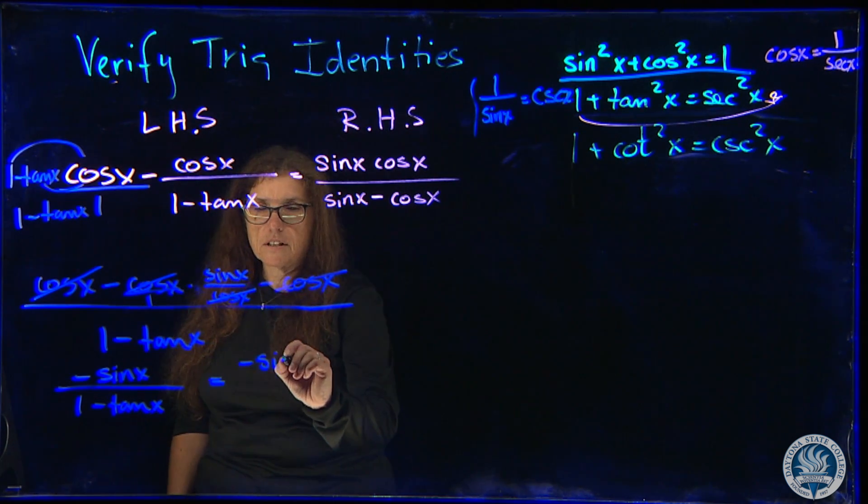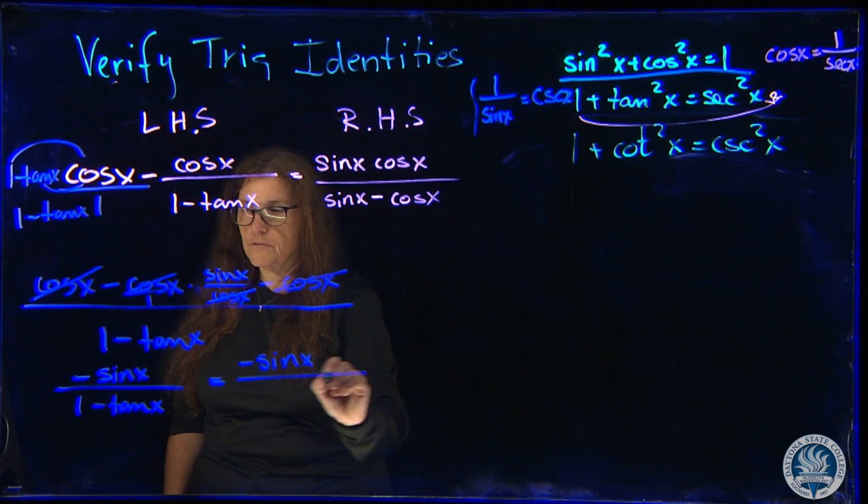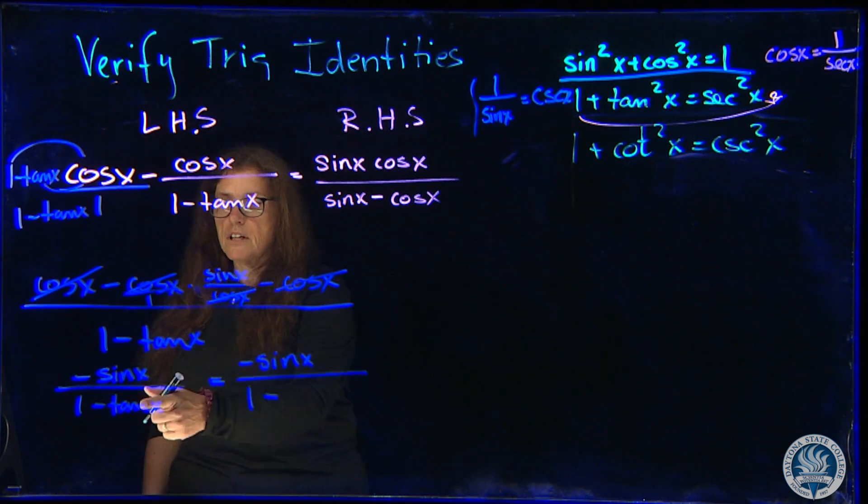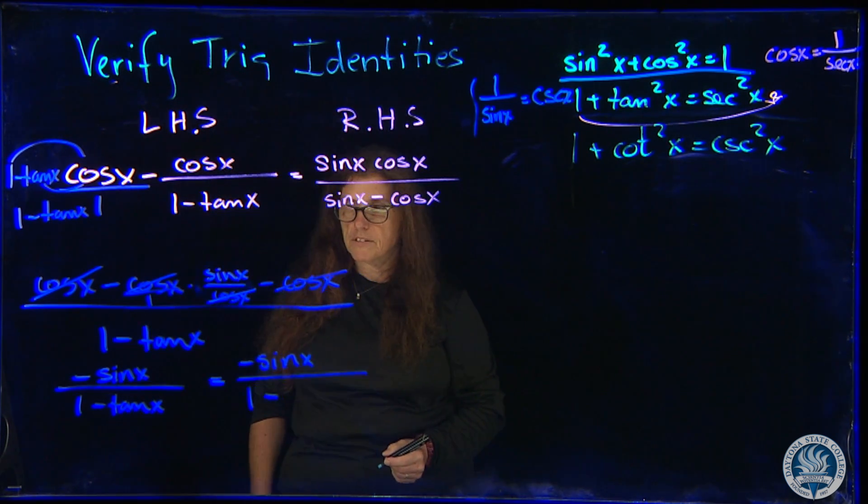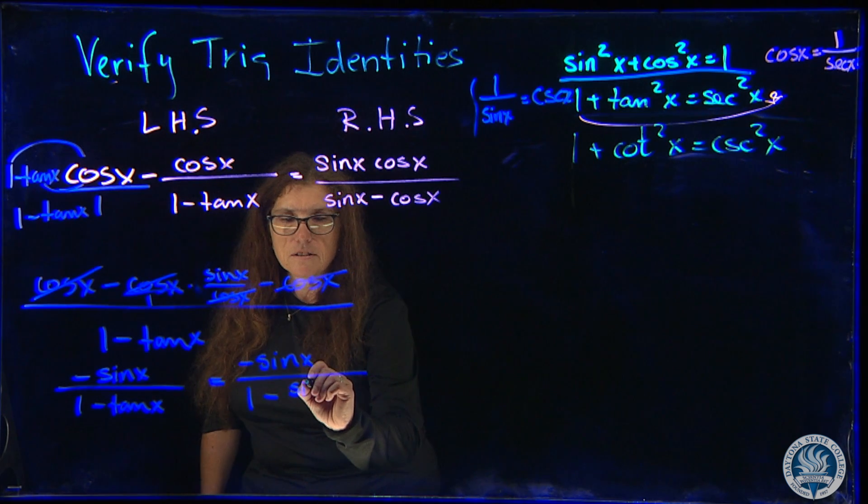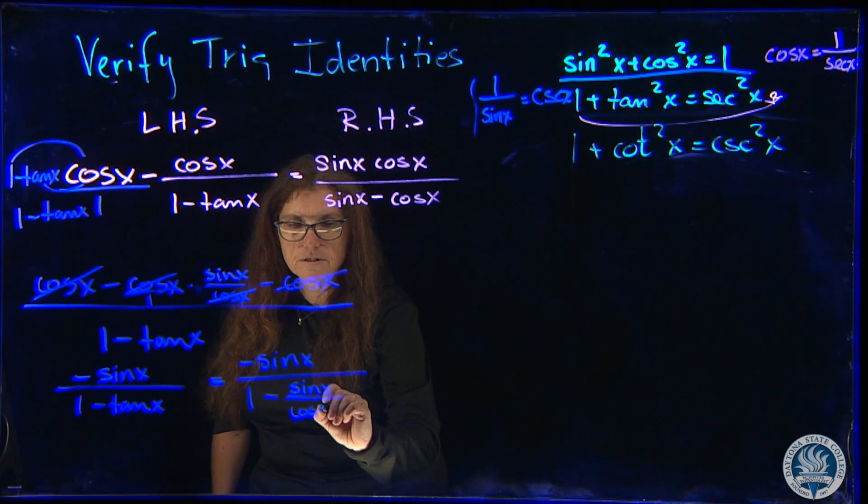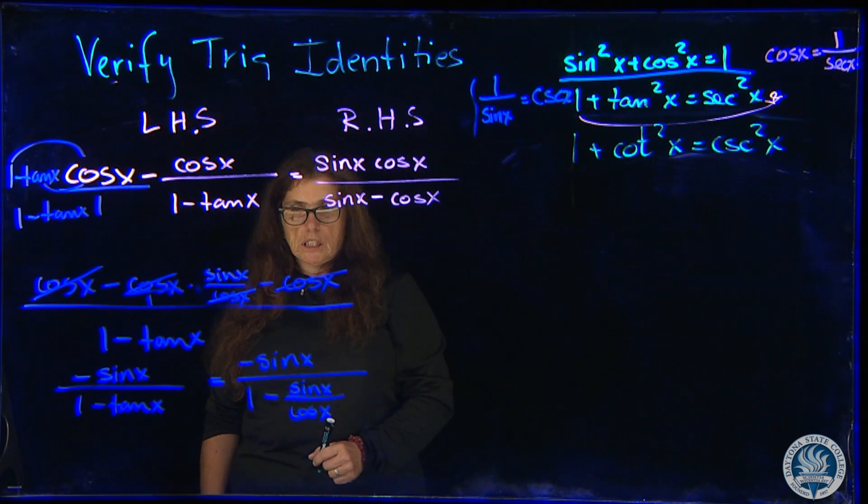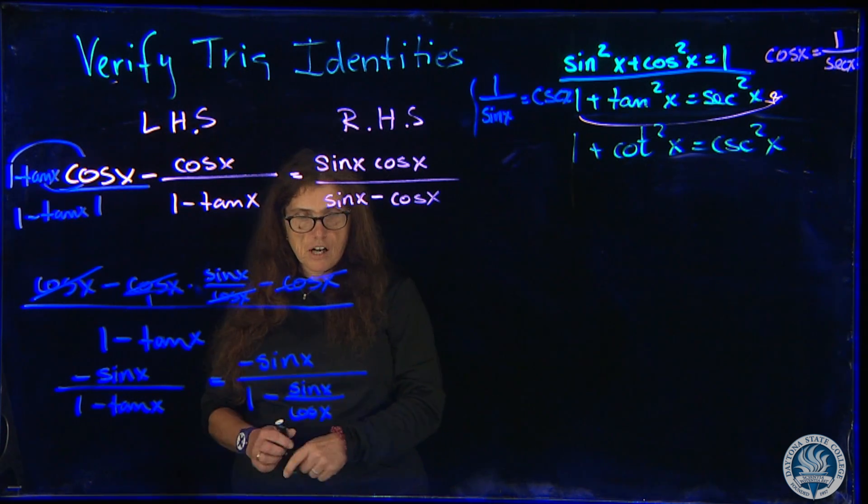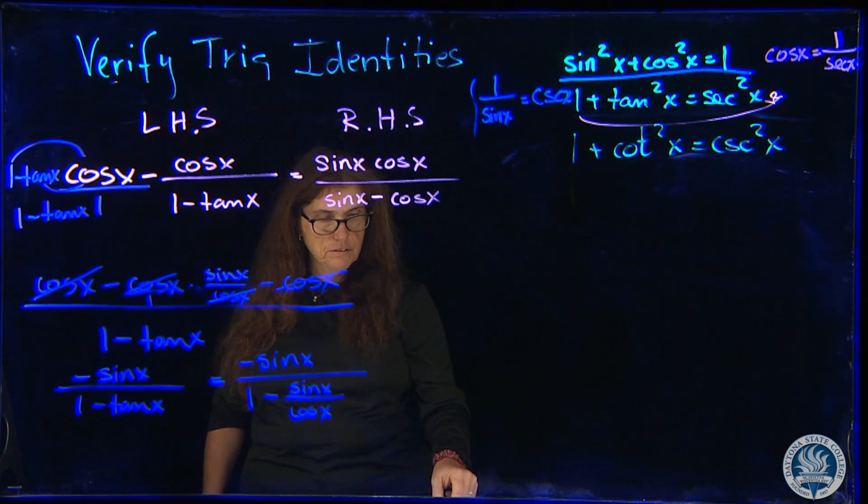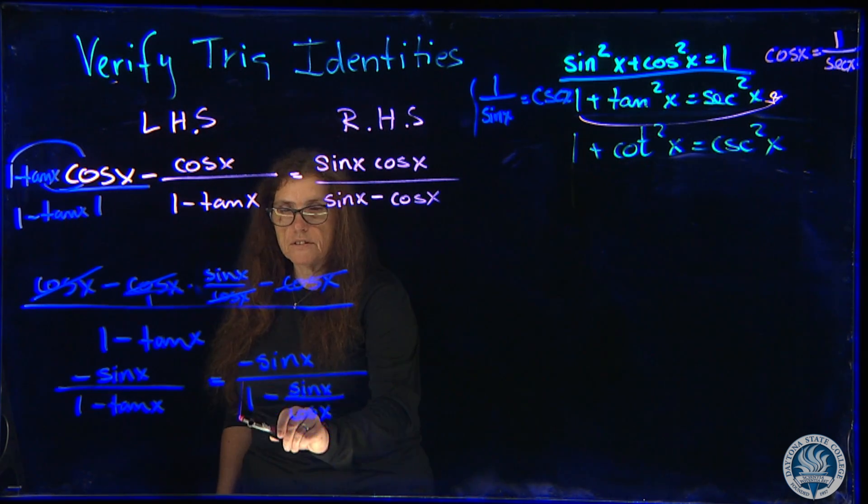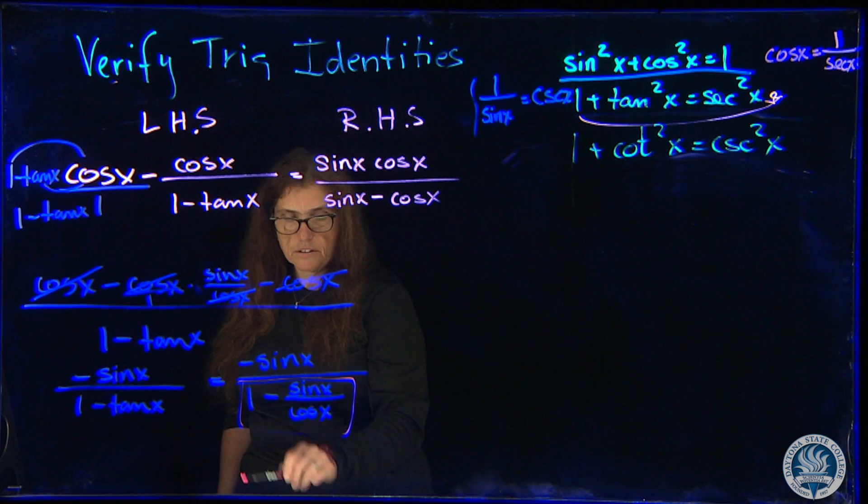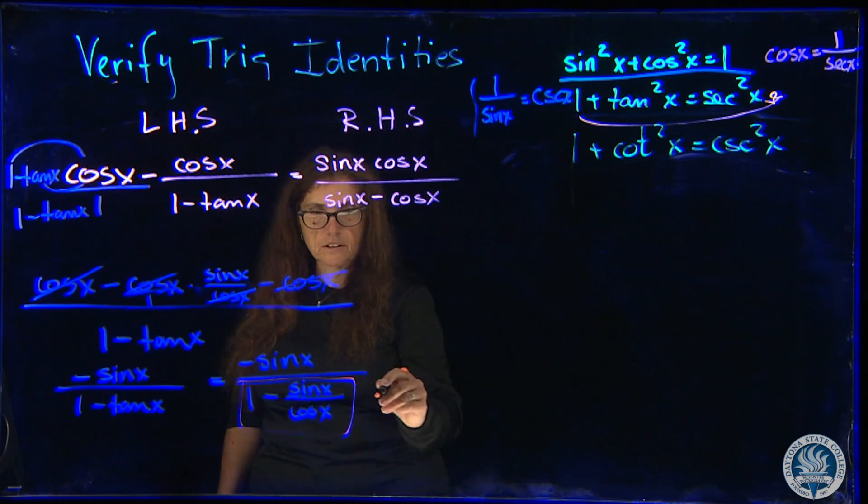Minus sine of x over 1 minus tangent can be rewritten as the sine of x divided by the cosine of x. What we need to do now is continue working just here on this denominator part and see what we can come up with.